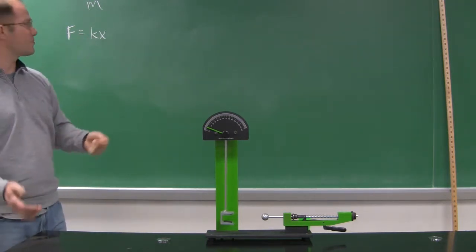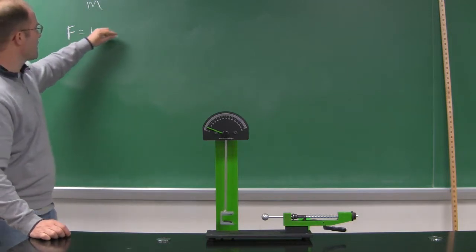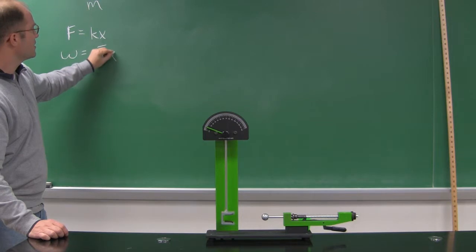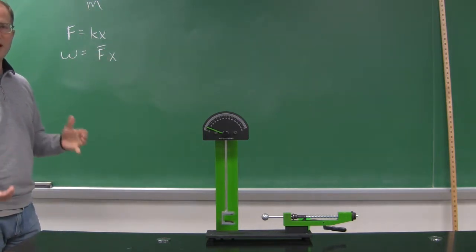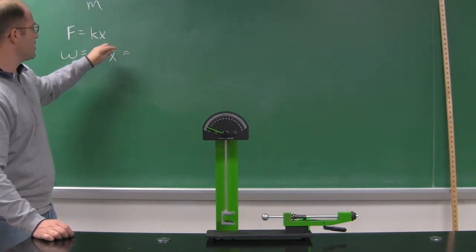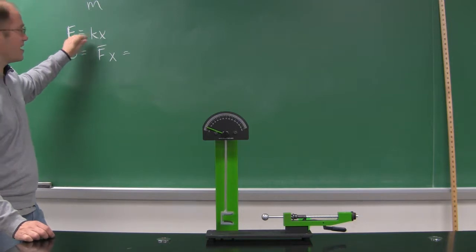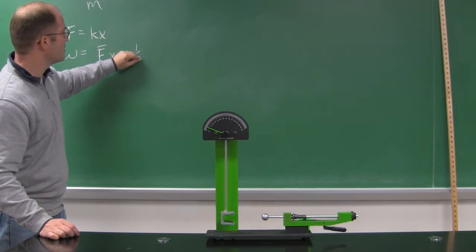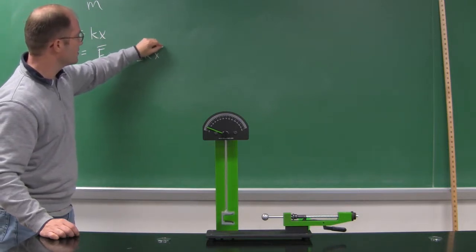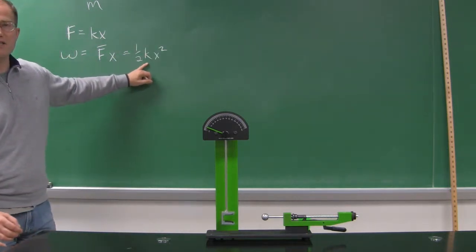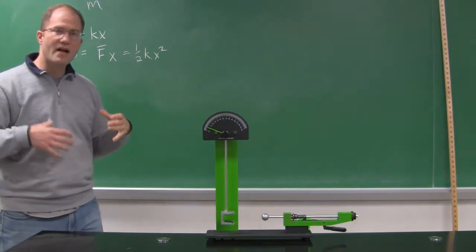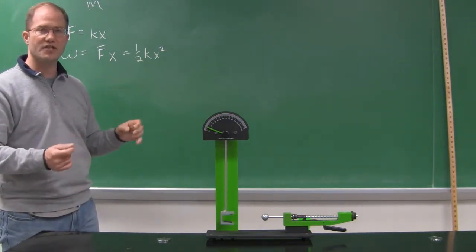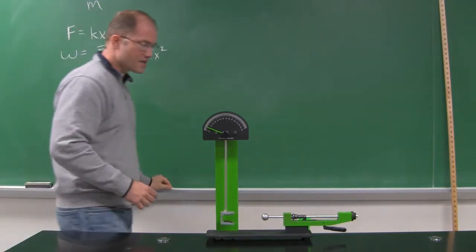If I'm going to do work on this spring, the work equals my average force times the distance of displacement X. We know that average force is one-half KX, so one-half KX times X is one-half KX squared. One-half KX squared indicates the amount of energy I've given to the spring — this is the potential energy, the stored energy of the spring.